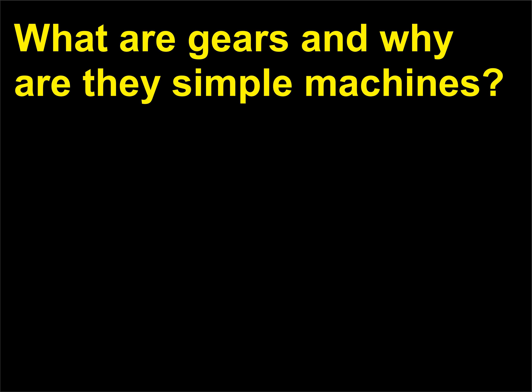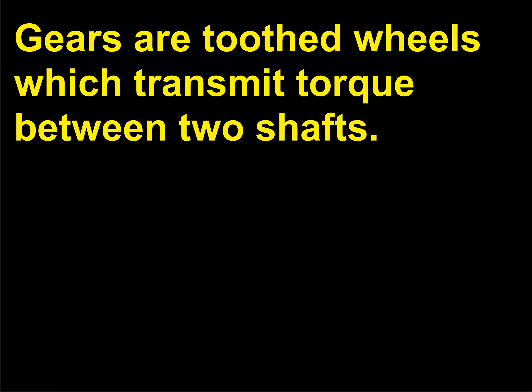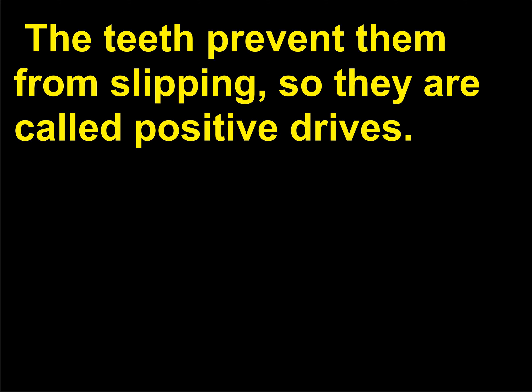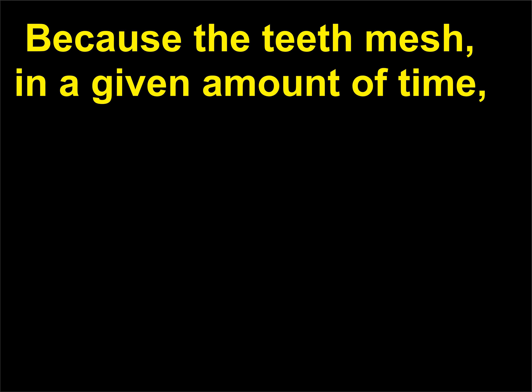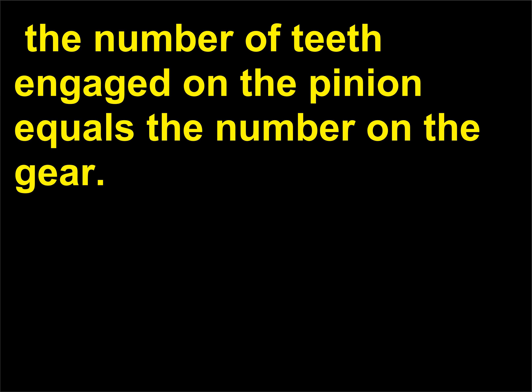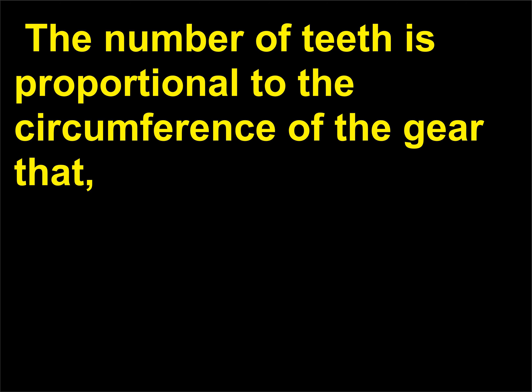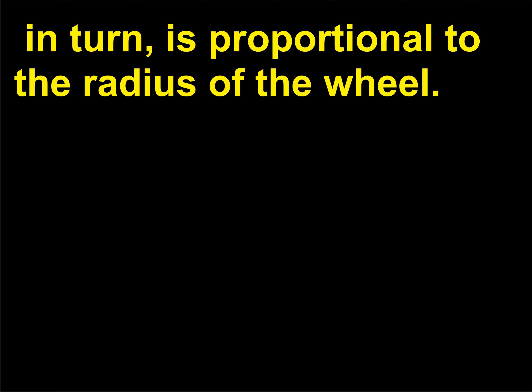What are gears and why are they simple machines? Gears are toothed wheels which transmit torque between two shafts. The teeth prevent them from slipping, so they are called positive drives. The smaller gear in a pair is called a pinion and the larger one a gear. Because the teeth mesh, in a given amount of time the number of teeth engaged on the pinion equals the number on the gear. The number of teeth is proportional to the circumference of the gear, which in turn is proportional to the radius of the wheel.